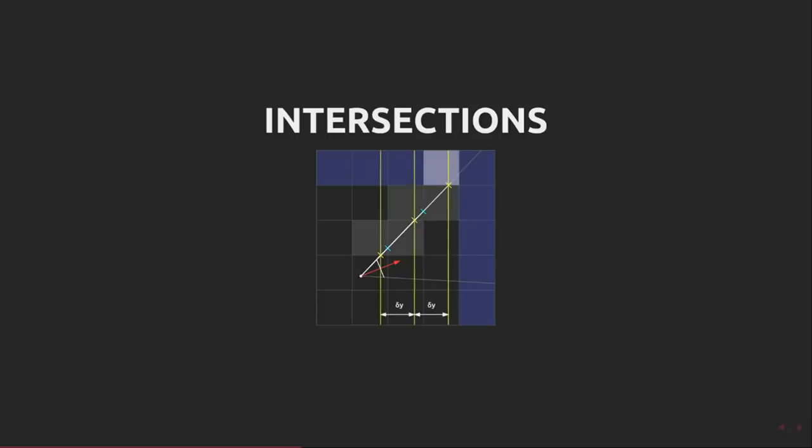Looking at the yellow intersection points with the horizontal grid lines, we note that they are equally spaced in both x and y. Once we've found the initial intersection, the first yellow point, the following intersections are exactly one unit of y apart, and in x they are spaced along by an amount I'll call delta y.